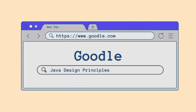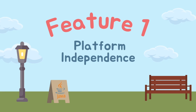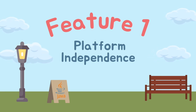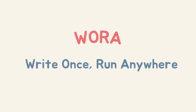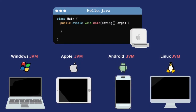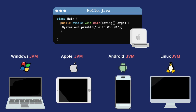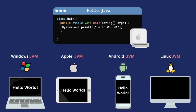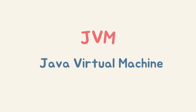Let's go over these design principles and features. The first key feature is platform independence. Java was designed with the primary goal of being a platform-independent programming language. This means that Java code can be written once and run on any device or platform equipped with the Java Virtual Machine implementation. As demonstrated in this example, a simple Hello World code written on a Mac can be executed on a Windows PC, an Apple iPad, an Android mobile device, and a Linux machine.